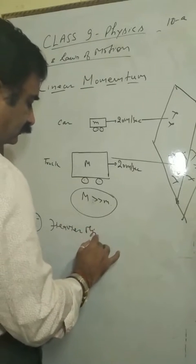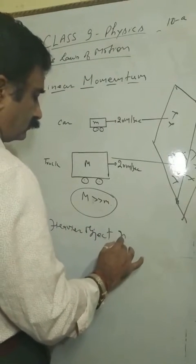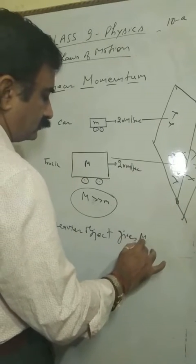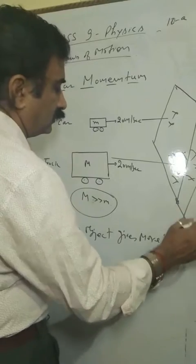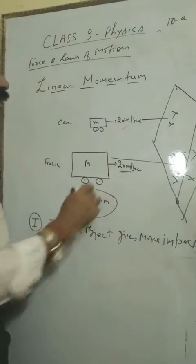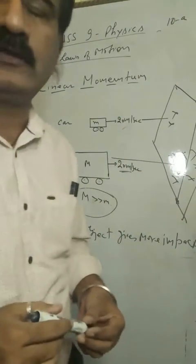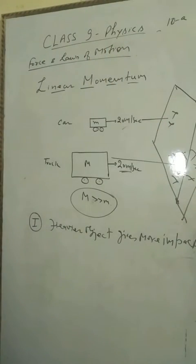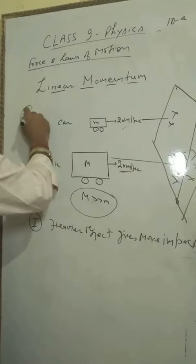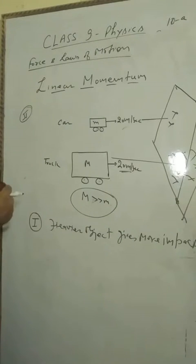So I can make the conclusion that heavier object gives more impact. Condition is that the velocity is constant. This is the first case. Now I will give the second case.